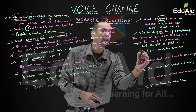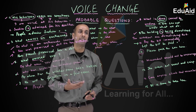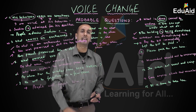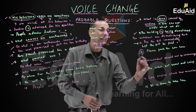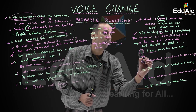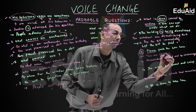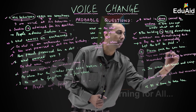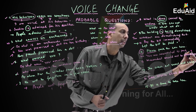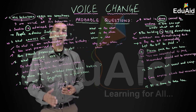Question number eleven: 'Please park the car here.' This is also an imperative sentence, but it is a request containing 'please.' When converting a sentence with 'please' from active to passive, we use the structure 'You are requested to.' The passive form is: 'You are requested to park the car here.'